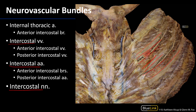At the inferior margin we have an intercostal collateral nerve branch, then an intercostal collateral artery branch, and then an intercostal collateral venous branch. The veins drain from two places: anteriorly via anterior intercostal veins into the internal thoracic veins, or posteriorly into the azygous system, which we'll see when we discuss the posterior mediastinum.